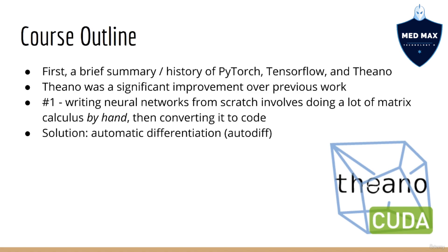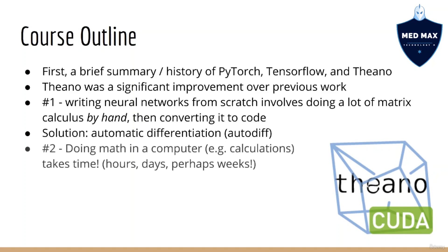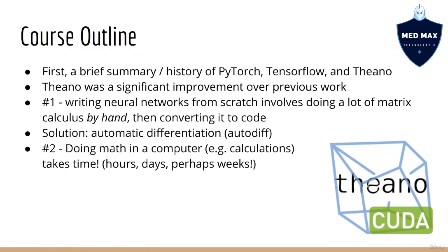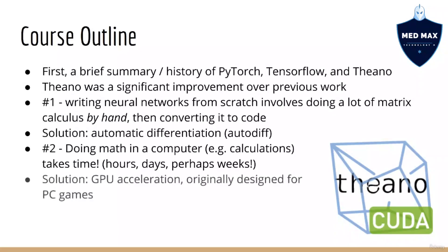What automatic differentiation means is you don't have to write down calculus equations since the computer will do that for you. Number two: there's a lot of math that has to happen in a neural network, and this takes a lot of time — meaning you'd have to wait hours, days, or even weeks to train your neural network. The Theano library was the first to innovate in this area by making use of GPUs, which were originally designed to improve the performance of PC games.